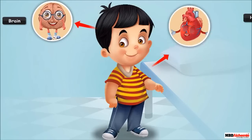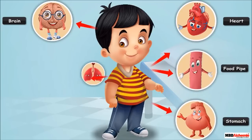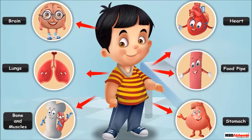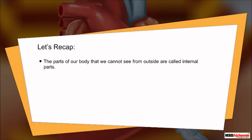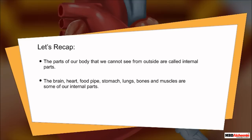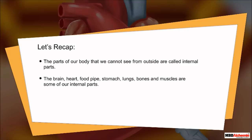So kids, inside Sid's body we have found his brain, heart, food pipe, stomach, lungs, bones, and muscles. We cannot see them from outside — they are called the internal parts. Just like Sid, we all have these internal parts in our body. The parts of our body that we cannot see from outside are called internal parts.